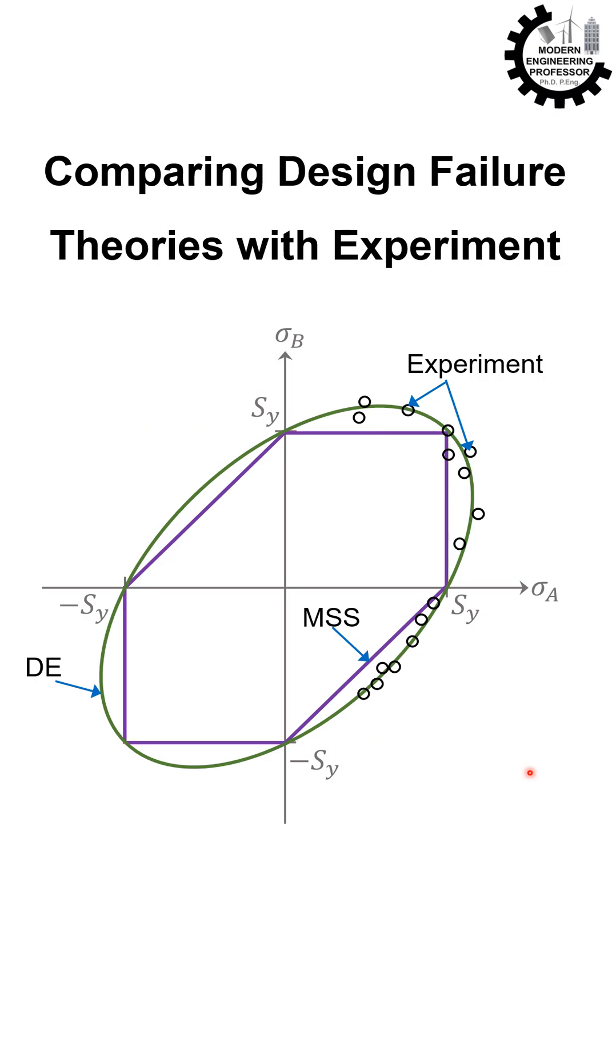So let's get rid of it. The other two theories show acceptable prediction for failure when compared against experiment. The distortion energy theory agrees very closely with experimental data, which shows its high accuracy.